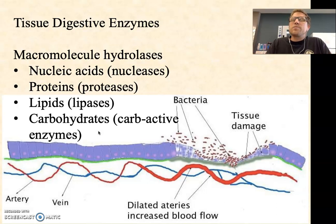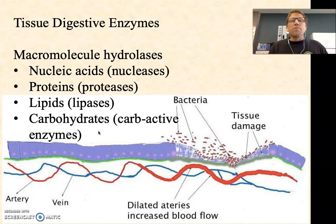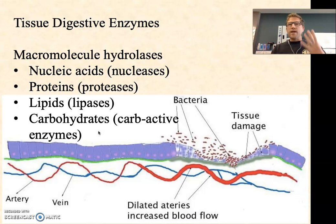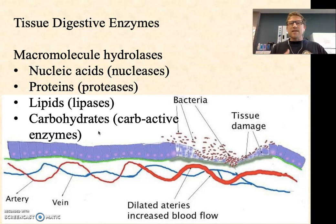From a bacterial perspective, they're not infecting you out of spite — they're simply feeding on you. One way they do this is by secreting enzymes that degrade your macromolecules. The four major macromolecules — nucleic acids, proteins, lipids, and carbohydrates — are all great energy sources for bacteria. So some carry nucleases to break down RNA and DNA, proteases to break down proteins, lipases for lipids, and carbohydrate-active enzymes to release sugars. In the process, they can cause significant tissue damage.